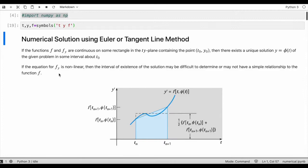If we have functions f and its derivative f_y which are continuous on some rectangle in the ty plane containing the points t0 and y0, then there exists a unique solution y equals some function of t of the given problem in some interval about t0.